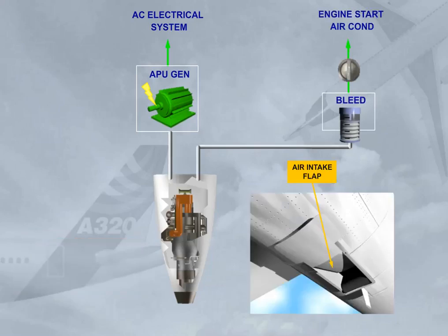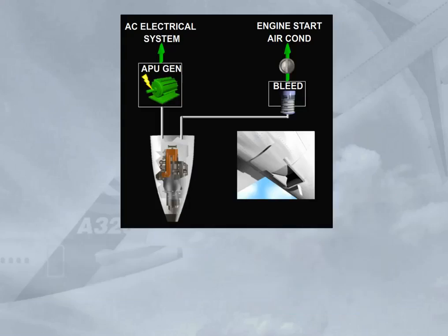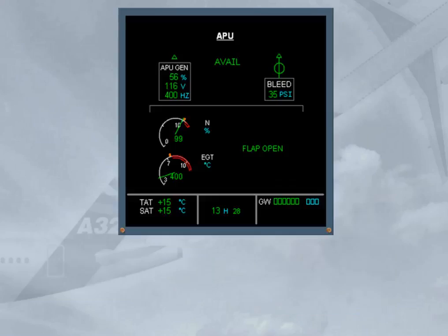The APU has an electrically operated air intake flap which, when it is opened, brings external air to its compressor inlet. We will now see how information is presented to the pilots. In the cockpit, you can check the following APU parameters on the ECAM APU page: EGT and Compressor Speed, APU Generator, APU Bleed, and Air Intake Flap Position.